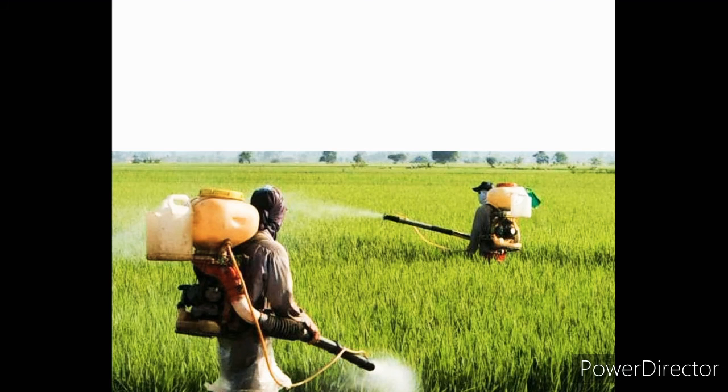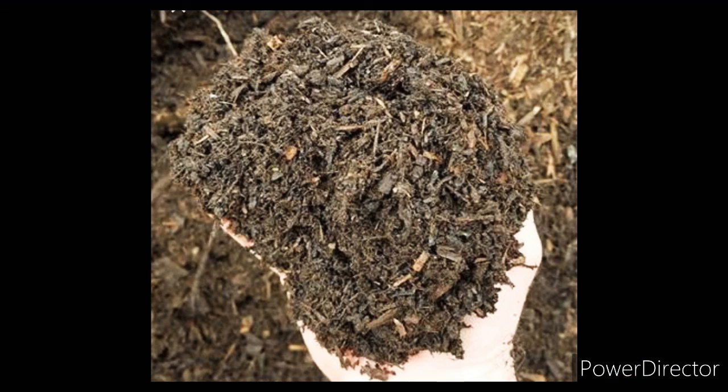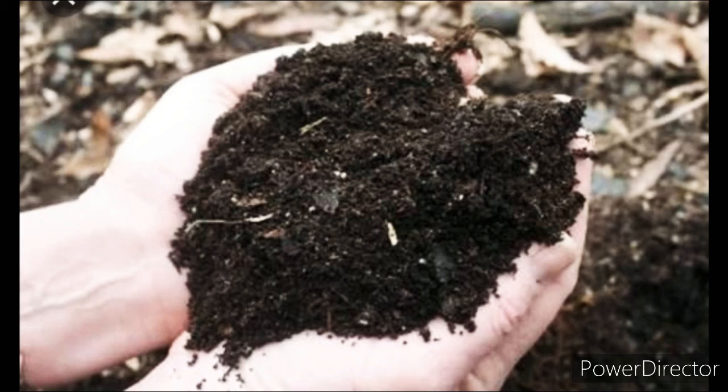When the soil is too acidic, it is treated with bases like quicklime or slaked lime. If the soil is basic, organic matter is added to it. It releases acids which neutralize the basic nature of the soil.